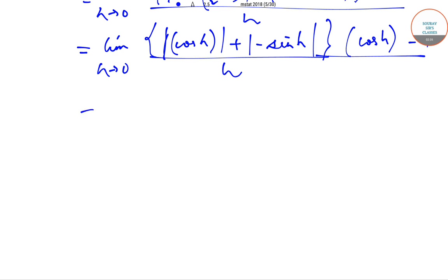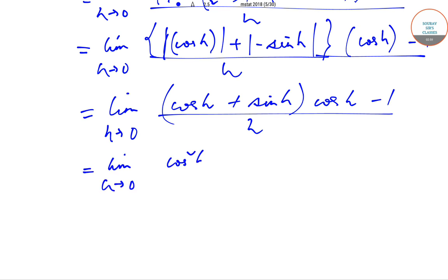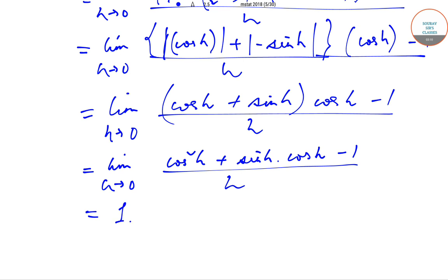This gives us limit h tends to 0 of [cos(h) + sin(h)] · [cos(h) - 1] / h, which simplifies to limit h tends to 0 of [cos²(h) + sin(h)·cos(h) - 1] / h. Putting h = 0, this limit exists and evaluates, so we can say that f'(π/2) exists.